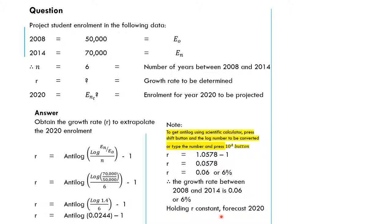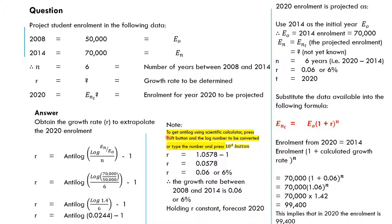Holding r constant to forecast. So if now we want to forecast, we are going to hold r constant. That means the 6% will be constant for the remaining years. Remember, we're going to have from 2014 to 2020. So for the number of years, we're going to be held constant.